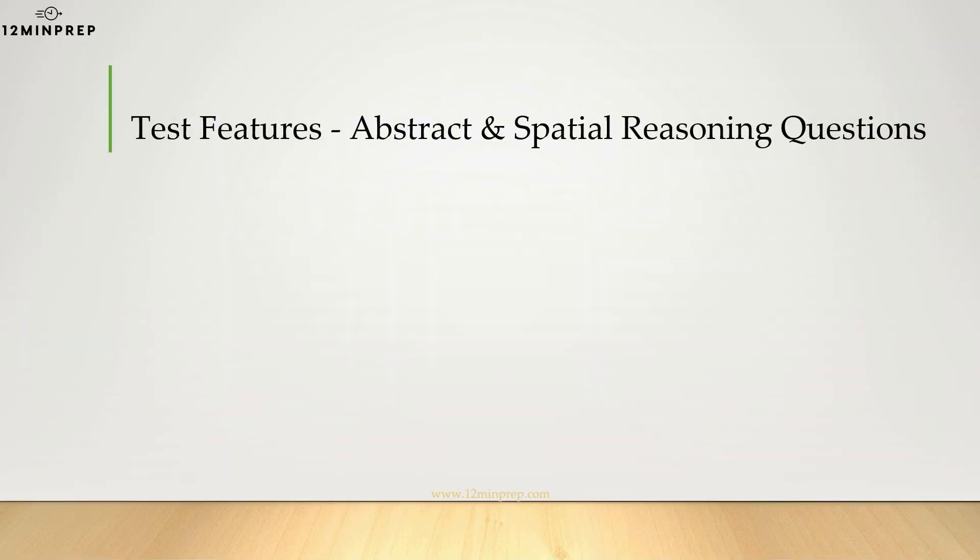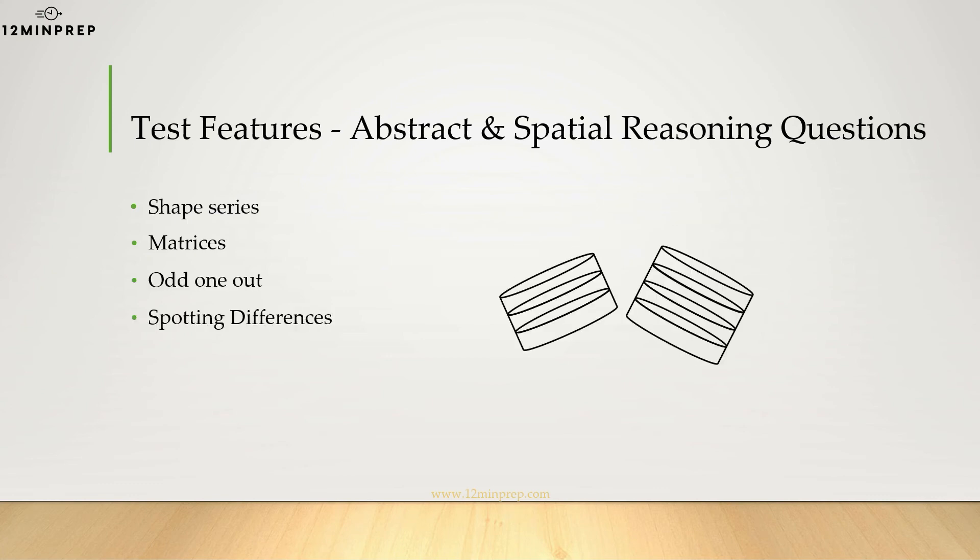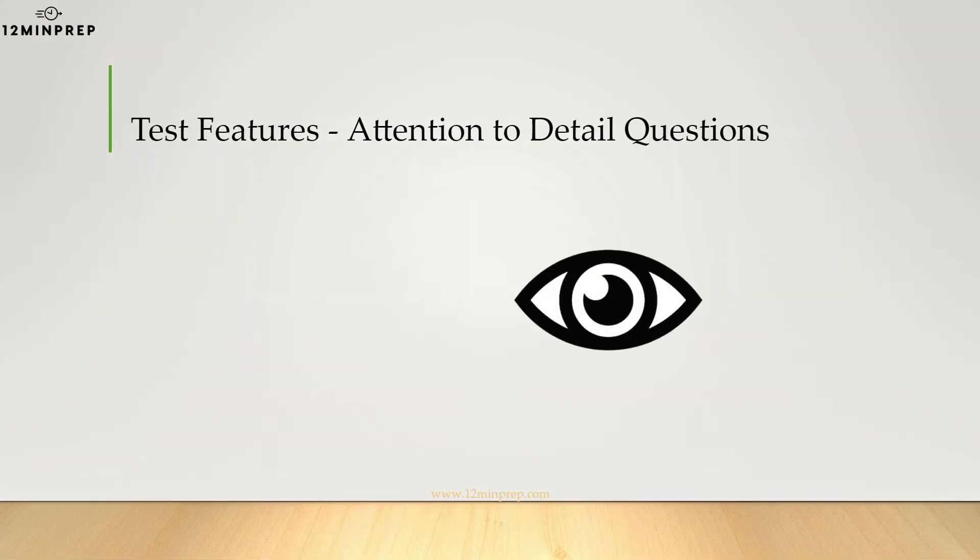Spatial and abstract reasoning questions will assess your ability to visualize and sort shapes. Question types include shape series, matrices, odd one outs, and spotting differences between similar figures. Attention to detail questions will test a very specific skill. You will be presented with tables and figures and will be asked to spot how many are duplicates. You will need to pay close attention to the figures to spot if there are any differences or if they are identical.